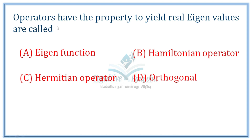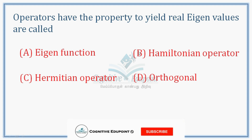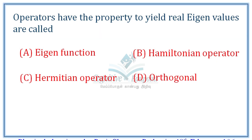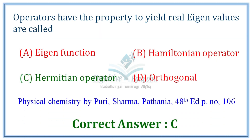Next question: Operators that have the property to yield real eigenvalues are called what? The options include Hamiltonian operator, Hermitian operator, and orthogonal. Yielding real eigenvalues is one of the key properties of the Hermitian operator. Correct answer: C.